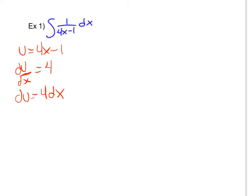If you recall from what we studied before, I can put a 4 in here as long as I put a 1 fourth on the outside. So I'm going to go ahead and do that and say that this is equivalent to 1 fourth times the integral of 4 over 4x minus 1 dx. Now I'm able to say I can put u in right here because I have defined u as 4x minus 1 and I can put du in for this 4 dx,